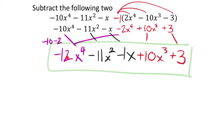If you wanted to put this in descending order you'd arrange: x⁴ term, x³ term, x² term, x term, then the constant. Also remember: the minus sign distributes to ALL terms inside the parentheses — not just the first one. If the parentheses started somewhere else, you'd only distribute to what's inside.